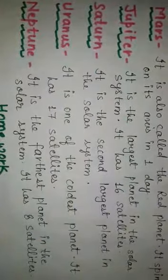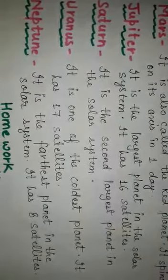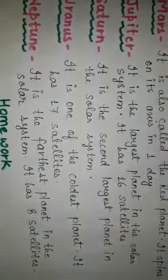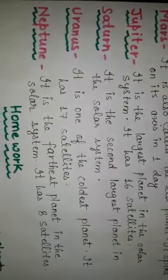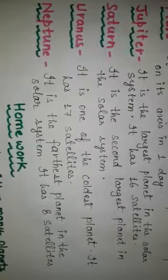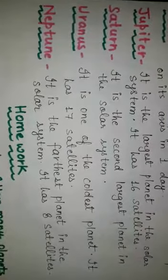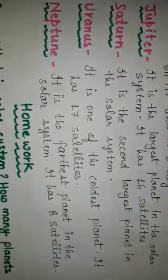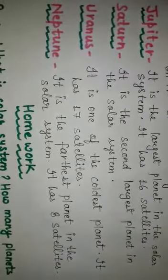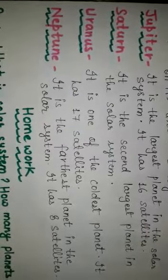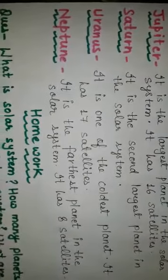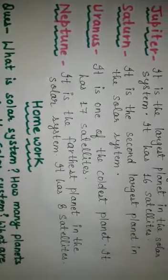Next planet: Jupiter. Jupiter is the largest planet in the solar system. It has 16 satellites. Saturn is the second largest planet in the solar system. It completes one spin on its axis in 10 hours and 40 minutes. It has about 18 satellites.